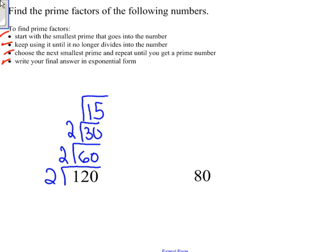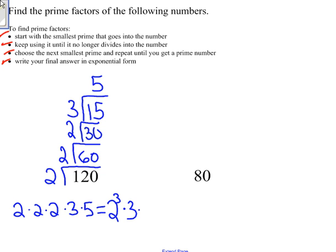Now 2 won't go into 15, so I go to my next prime number that will go into 15, which is 3, and that will go in 5 times. Now that I've ended with a prime number on top, I know I am done here. So the primes that I got are 2 times 2 times 2 times 3 times 5, and to write that in exponential form, that is 2 to the third power times 3 times 5.